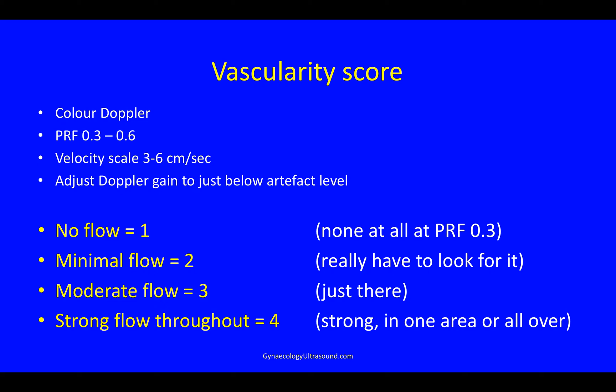The vascularity score is very important. We get this using colour Doppler with a PRF of between 0.3 and 0.6 — I usually start at 0.6, but if I want to prove there is no flow, then I go down to 0.3. This gives you a velocity scale of three to six centimetres per second. You then need to adjust your Doppler gain to just below the artefact level. If there is no flow at all even at PRF 0.3, that is a score of one. If you really have to look for the colour, that's a score of two. If when you turn your colour Doppler on the flow is just there, that's a three. And if you have strong flow throughout — in one area or throughout the mass — then that would be a score of four.